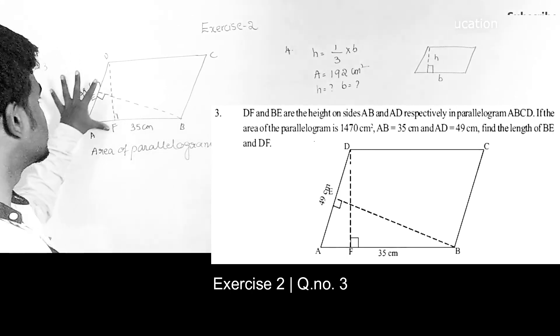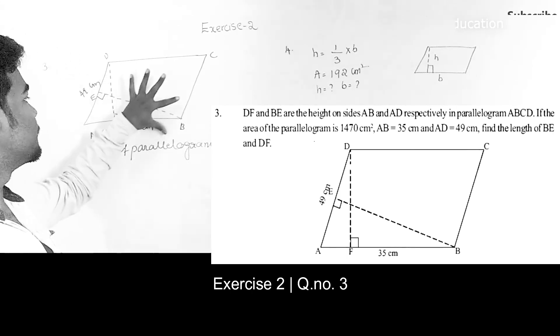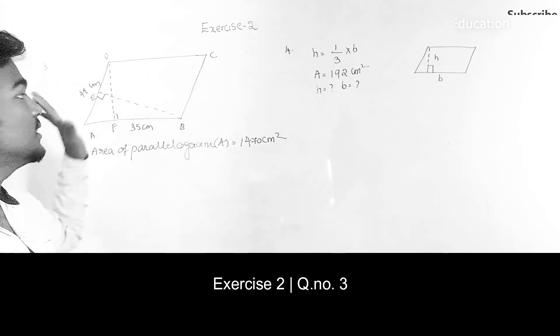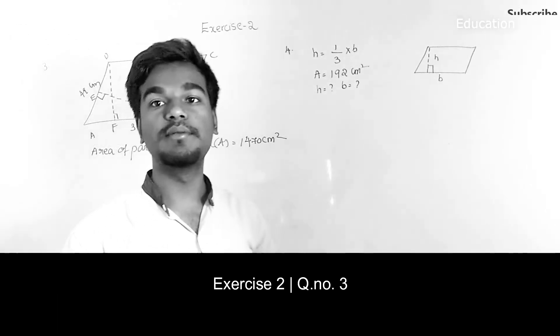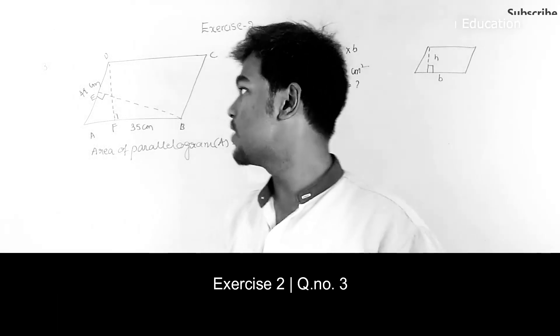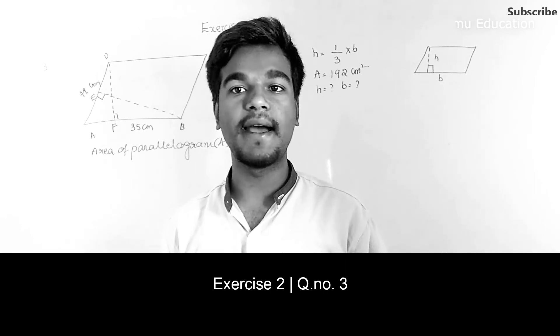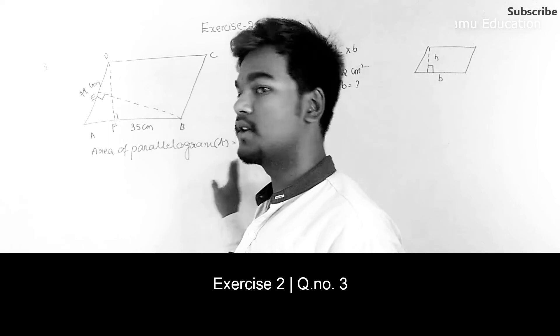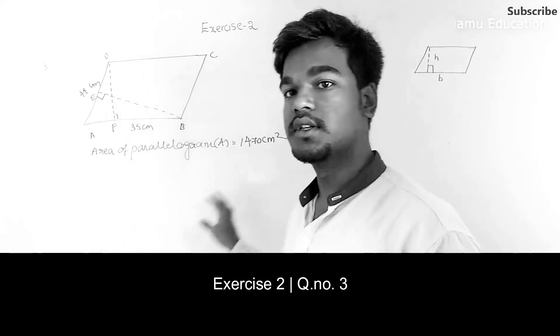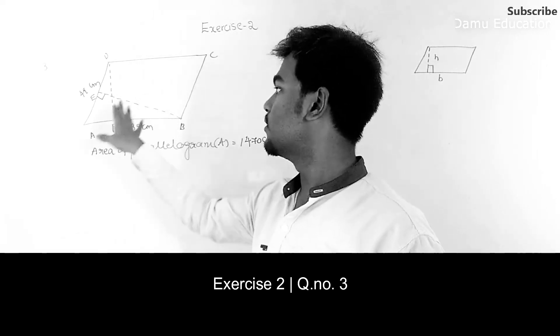And DE is a base with perpendicular height BE. So we have to find those heights. They are given the bases and also the area of the parallelogram, that is 1470 centimeter squared.